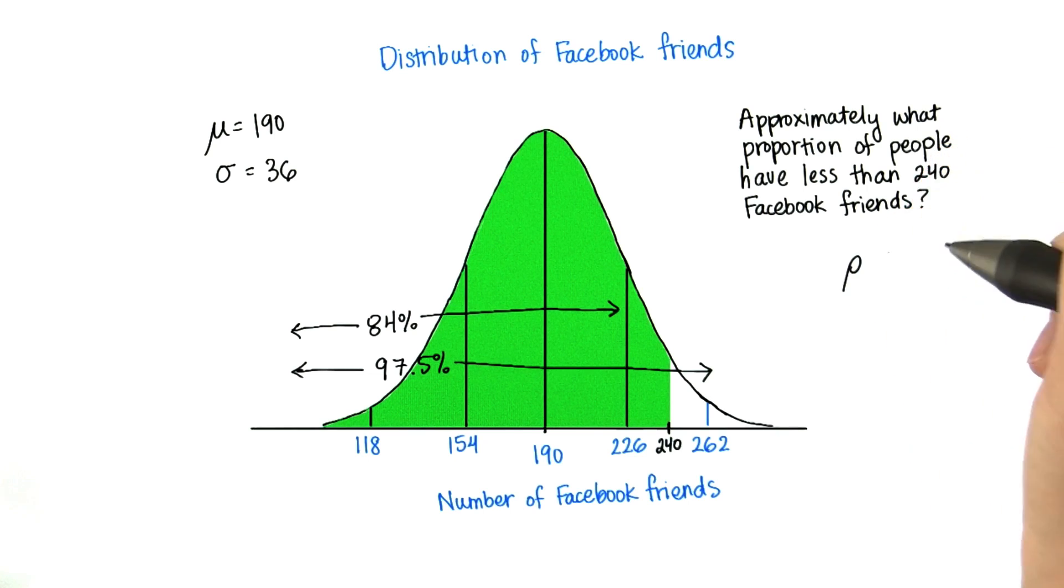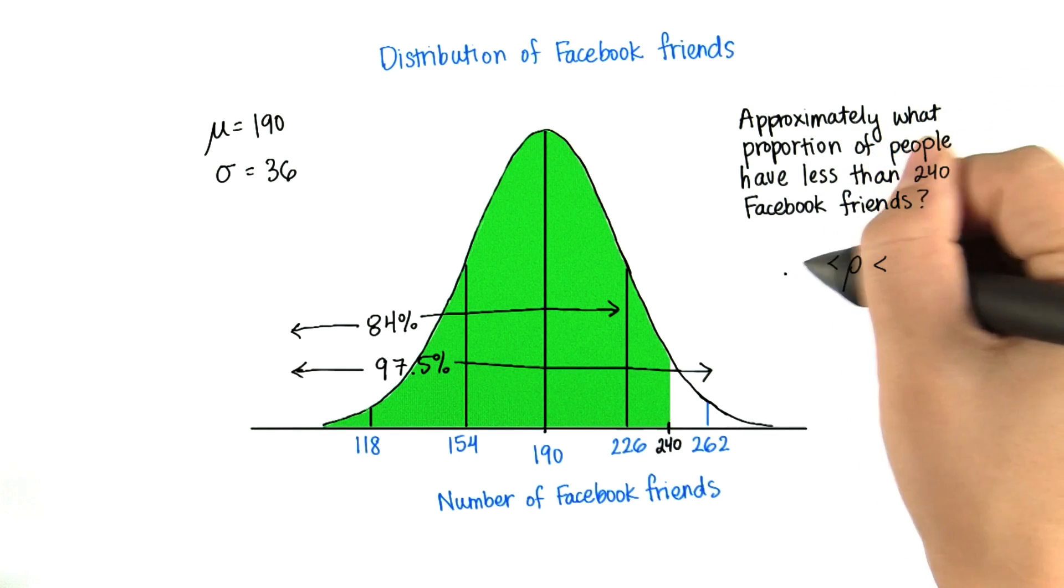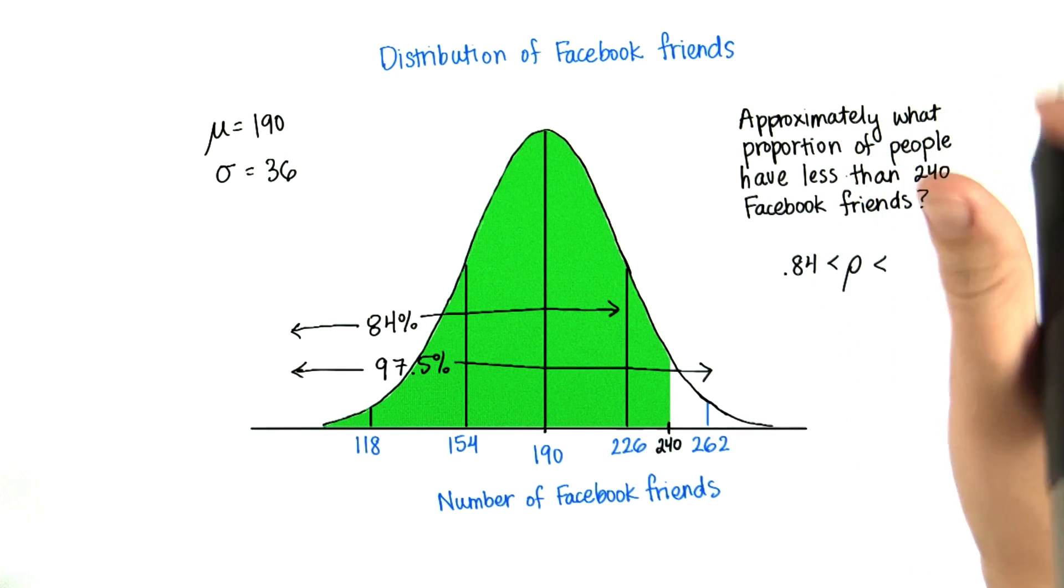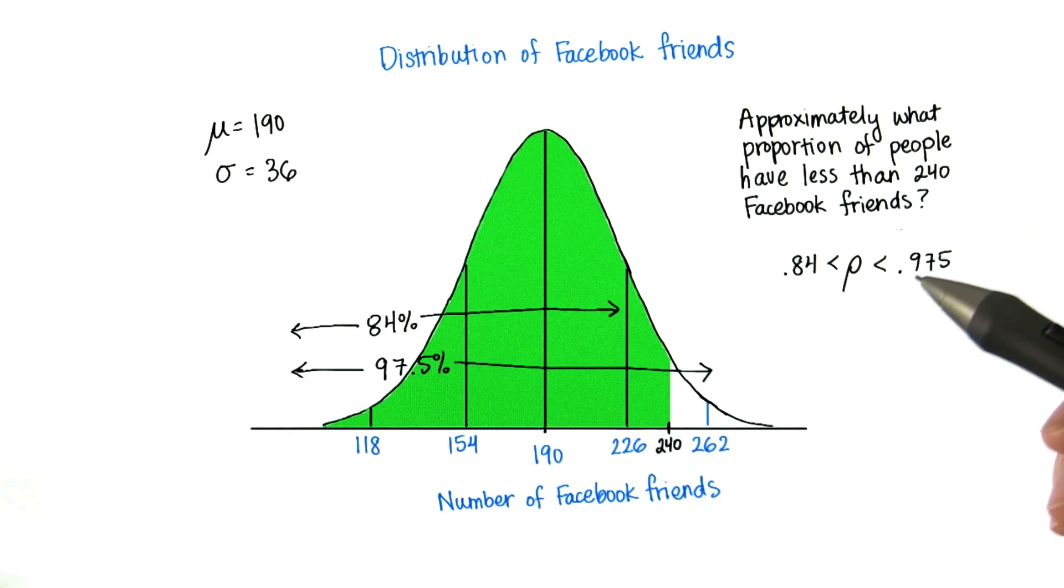So let's call the proportion p. We know p has to be greater than 0.84 and less than 0.975. But we're going to use a tool that will help us figure out for any value what proportion will this be.